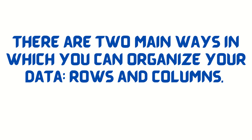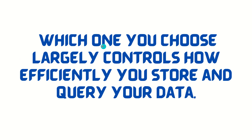Today we'll be talking about the two main ways in which we can organize our data. First is row-wise, second is column-wise. We all know from DBMS and SQL that we have a table consisting of rows and columns. Generally we always store data row-wise, but with a lot of new tools coming up, data is also being stored in a columnar fashion. Choosing the format largely depends on how efficiently you want to store and query your data.